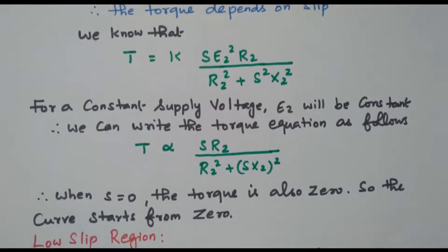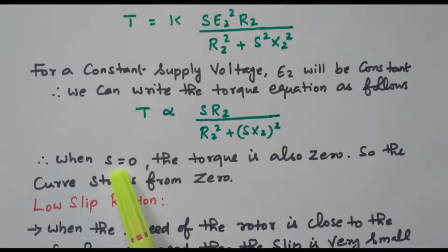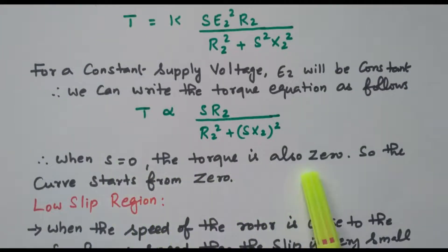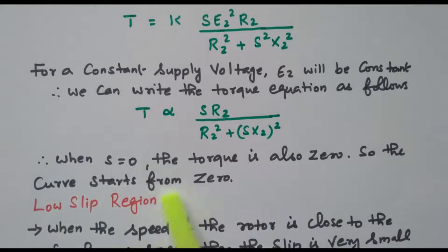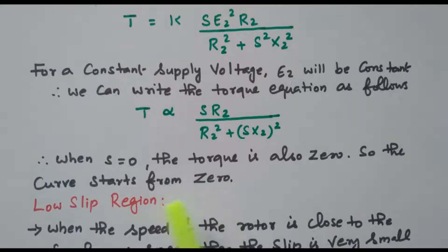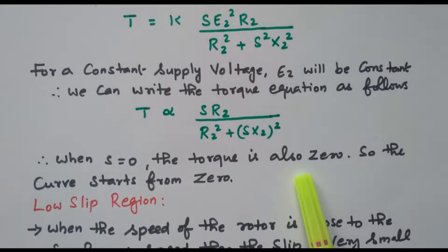When S is equal to zero, the torque is also zero. So the curve starts at zero — the initial curve starts at zero value because when slip is zero, torque is also zero.